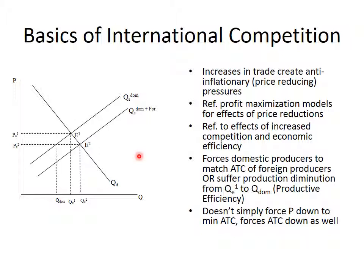Ultimately, we're going to see that moves us towards economic efficiency. Why? Because the downward pressure on prices reduces profits, pushes you down the marginal cost curve until eventually you hit minimum marginal cost, and the same thing will be true of average total cost.